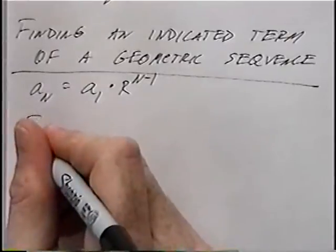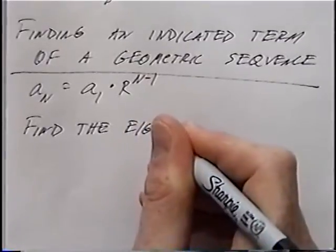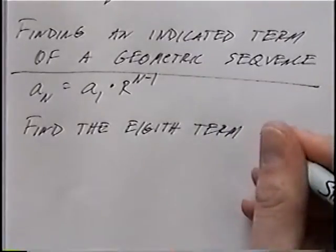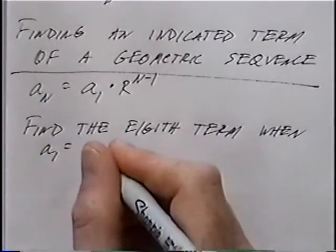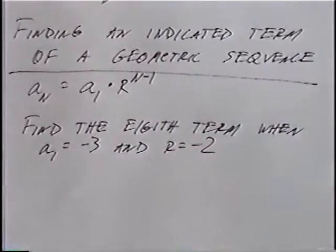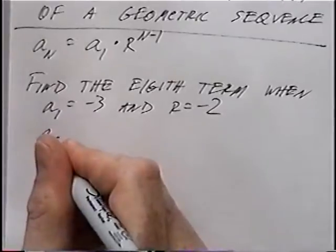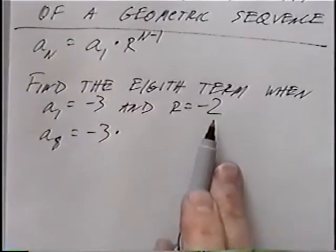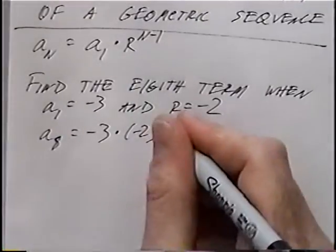The first problem: find the 8th term when a sub 1 equals negative 3 and r equals negative 2. Using the formula, a sub 8 equals a sub 1, which is negative 3, times r, which is negative 2, to the exponent of n minus 1, which would be 8 minus 1.